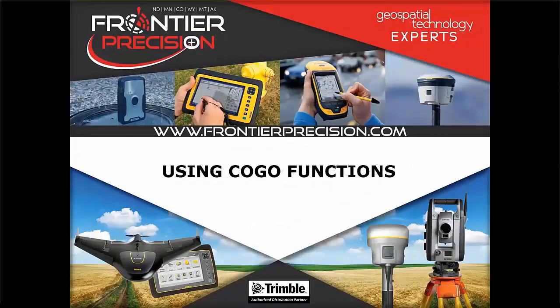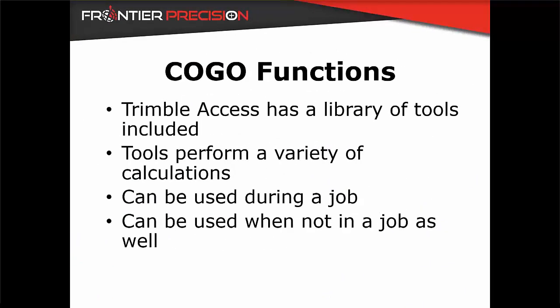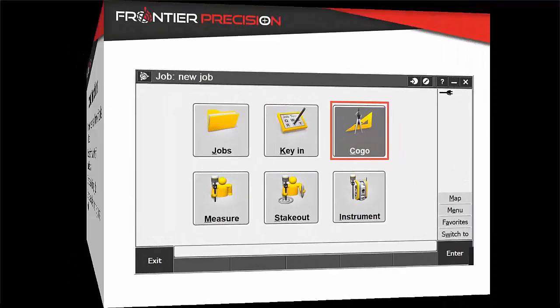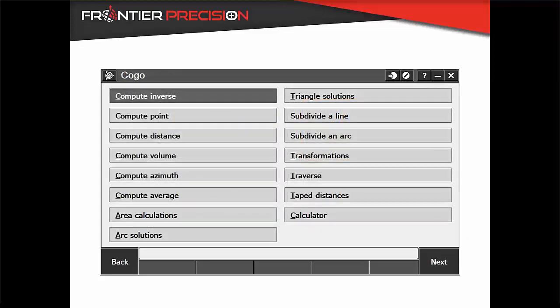Hi, my name is Andrew Munson and I'd like to welcome you to another Tech Talk by Frontier Precision. This video is part of a series of Tech Talks in which we will be covering the COGO tools inside of Trimble Access. COGO in Trimble Access stands for Coordinate Geometry. The COGO tools are part of an included library of tools inside of Trimble Access, and they can be used to perform a variety of calculations with your survey data. These calculations can be performed during your survey or when you are not in a survey. The COGO library is located within General Survey in the top right corner, and when you click on the tile, you will be able to see all of the tools that are available to you.